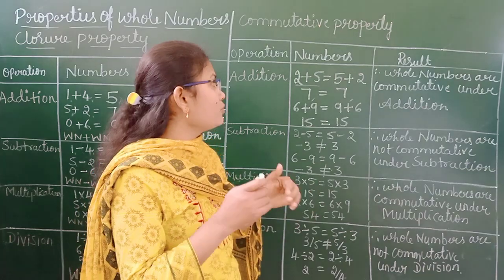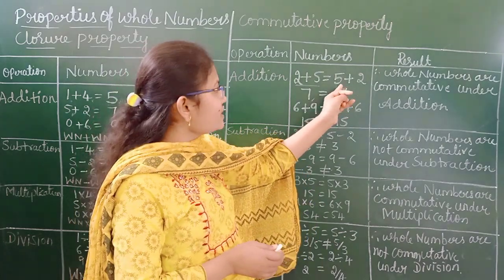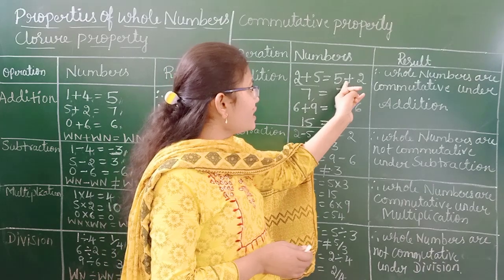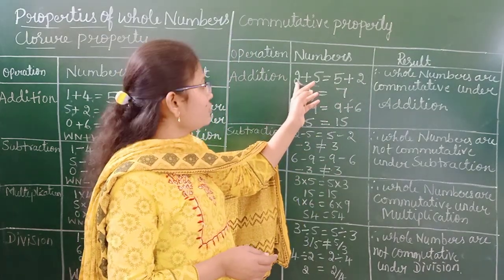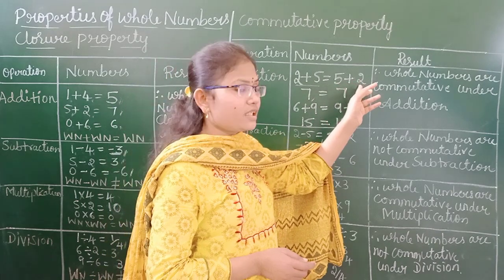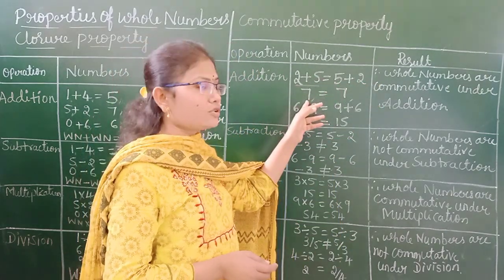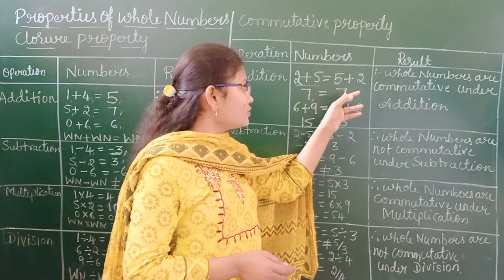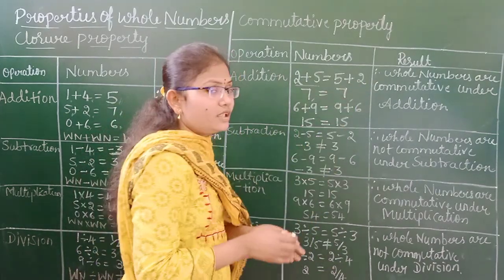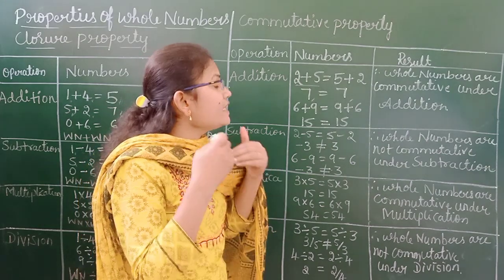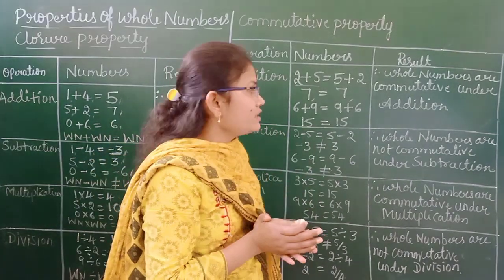I am going to change the order — on the right-hand side I have taken 5 plus 2. So on the LHS: 2 plus 5, on the RHS: 5 plus 2. 2 plus 5 equals 7 and 5 plus 2 equals 7. We get equal results. If you add any numbers in any order, the result is the same.